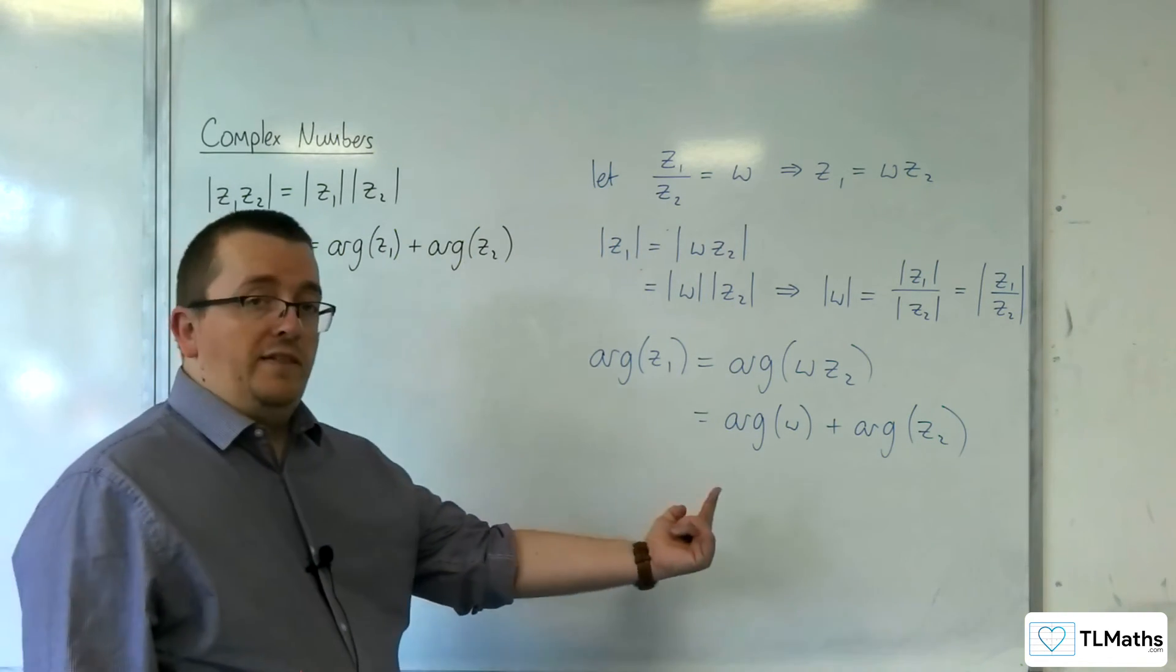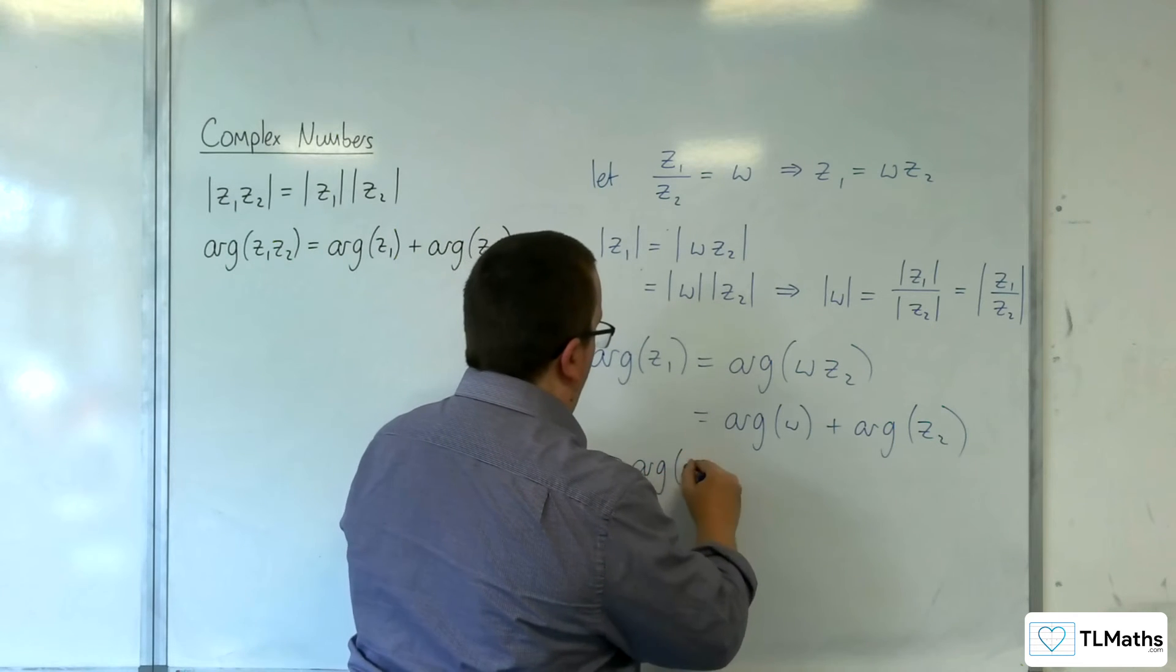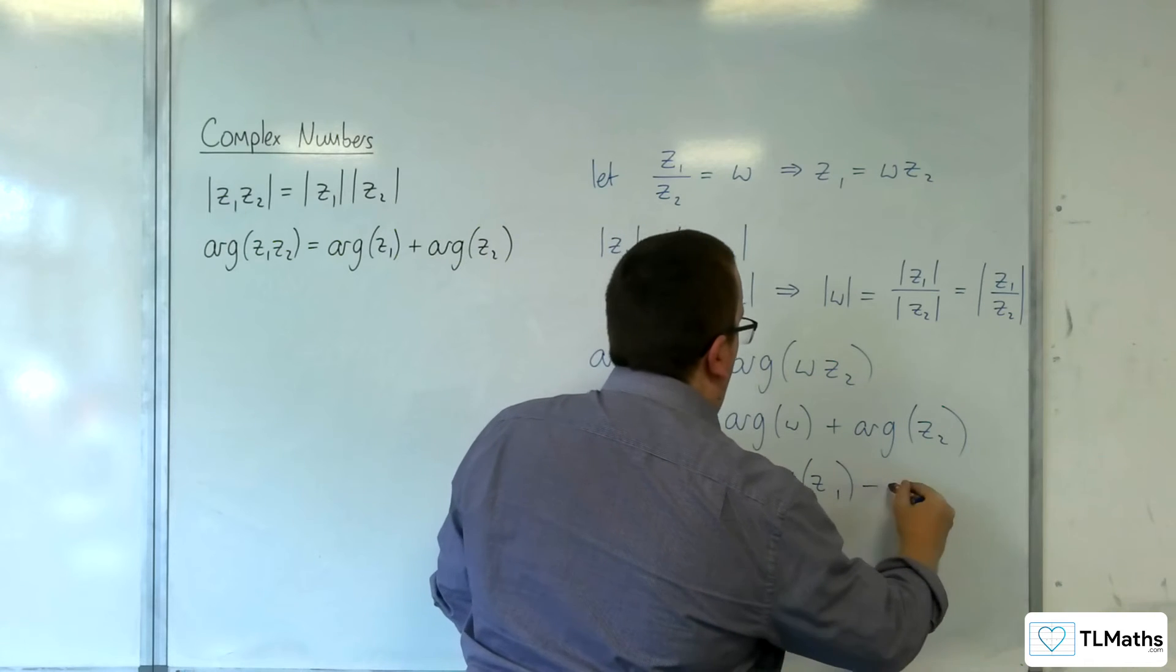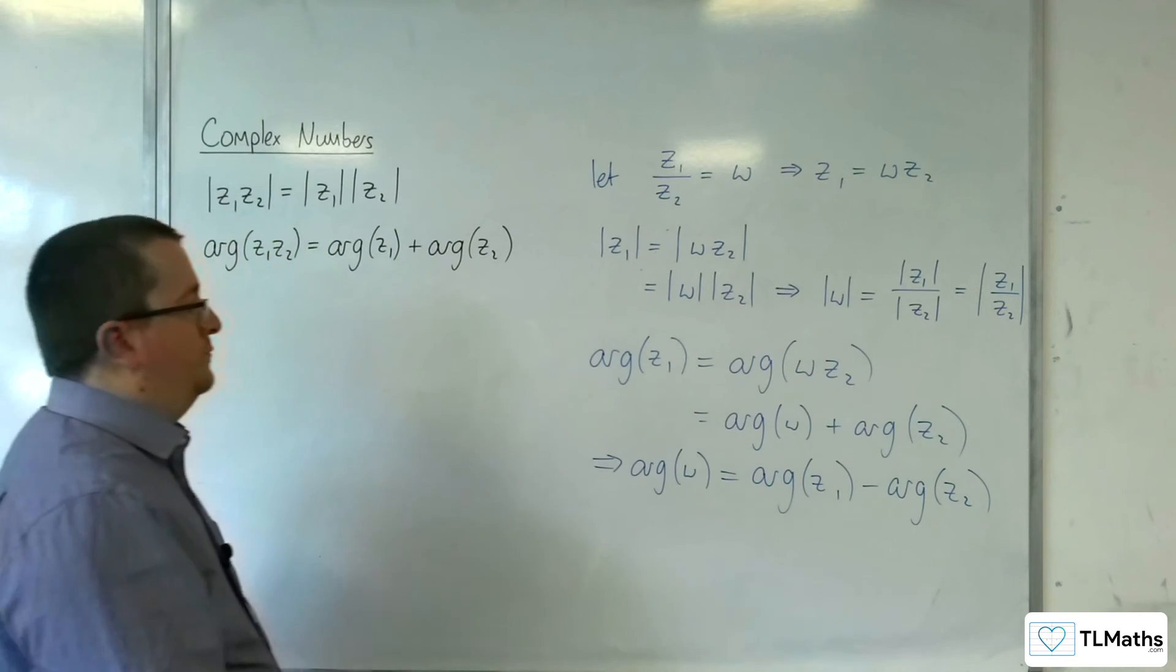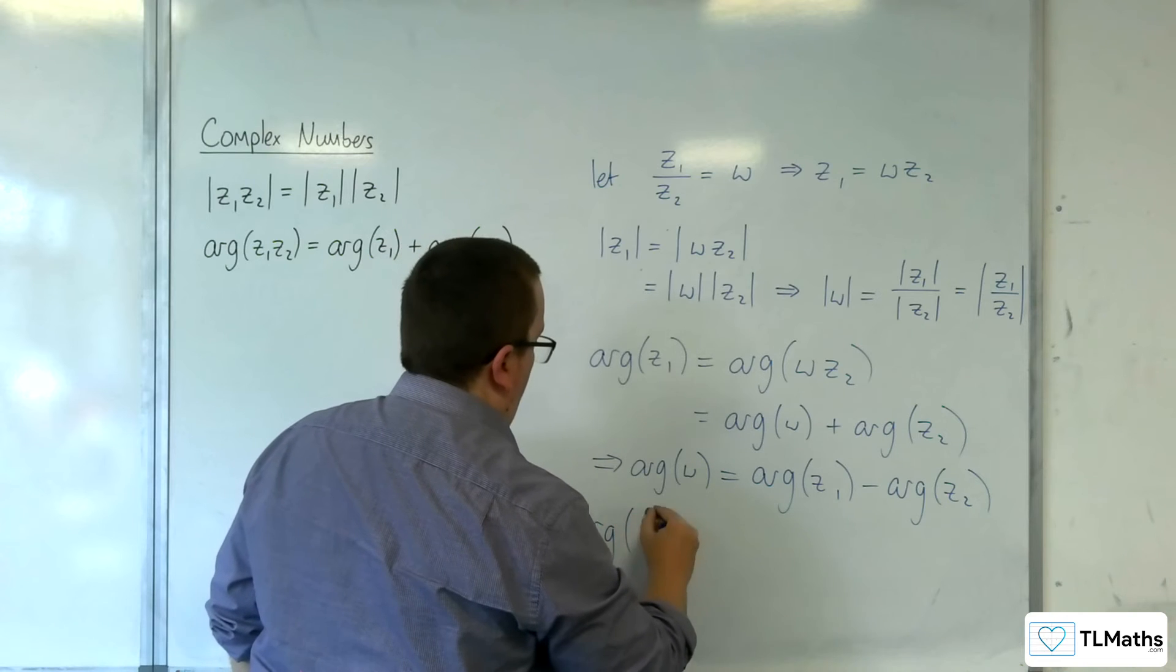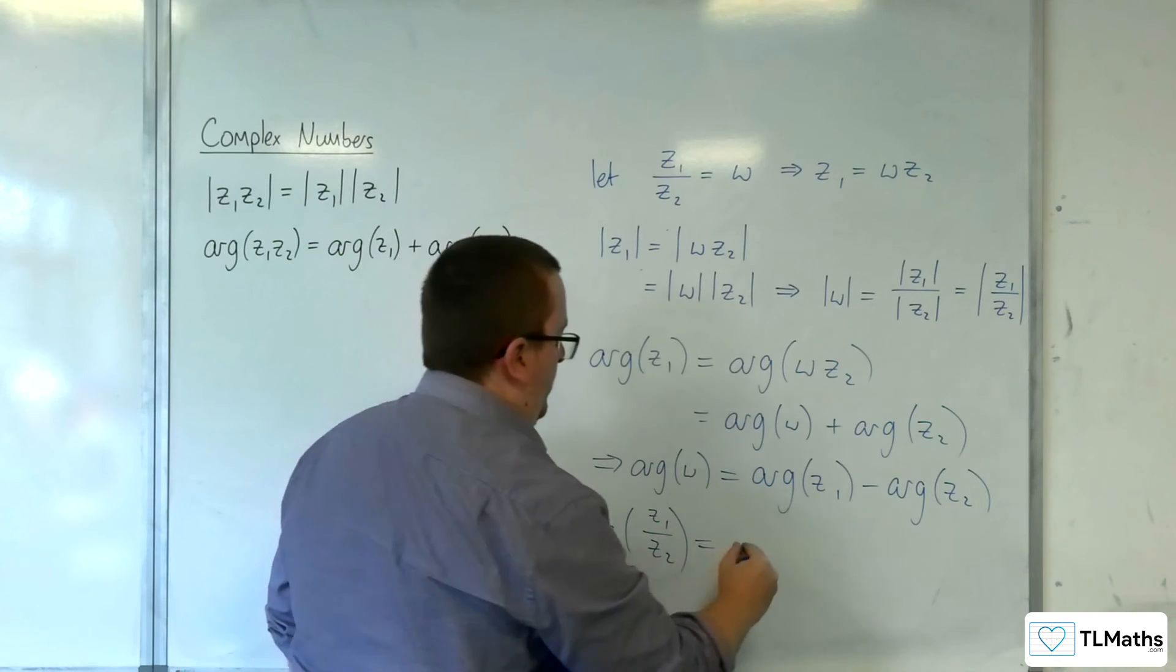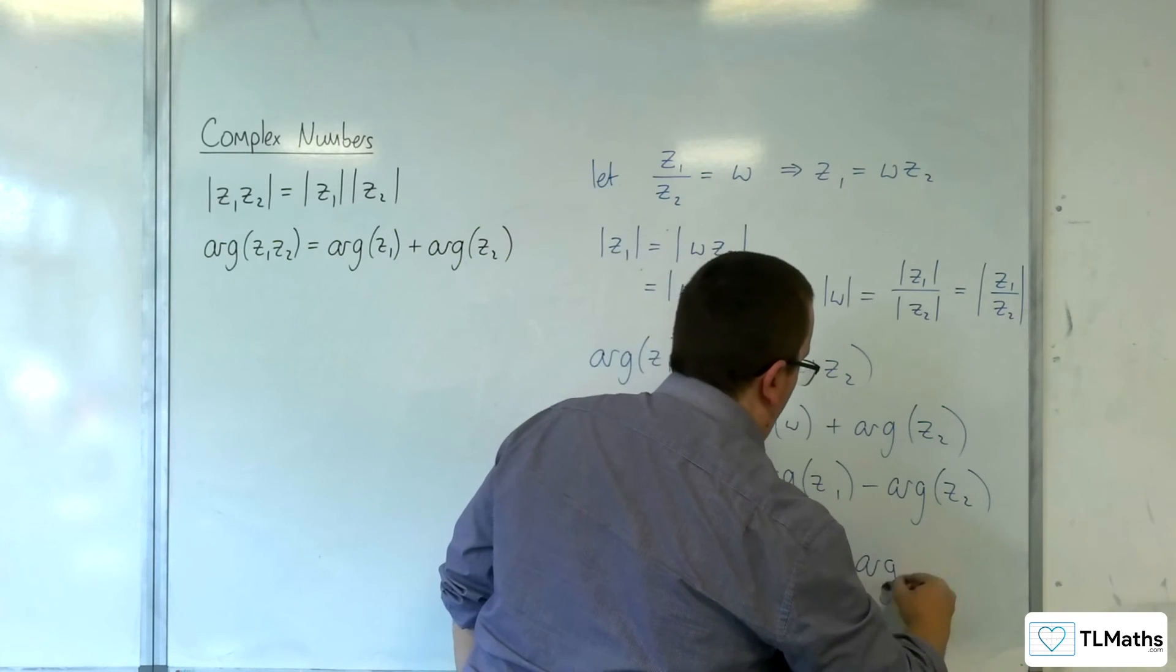So if I just subtract the argument of Z2 from both sides, that implies that the argument of W must be equal to the argument of Z1 take away the argument of Z2. So the argument of Z1 over Z2 must be equal to the argument of Z1 take away the argument of Z2.